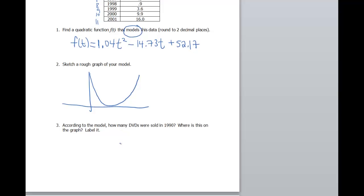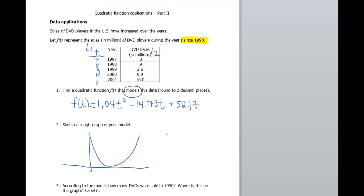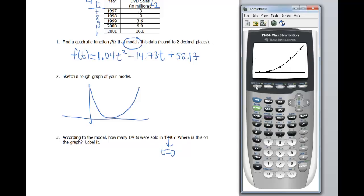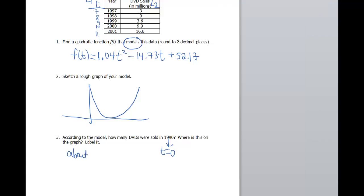Okay, all right, according to the model, how many DVDs were sold in 1990? Okay, so 1990 is our year. T, remember, is years since 1990. So that means we want to look at where T equals zero. Okay, so let's take a look at our table. So if I go to second table, since I can't see much in my graph here, since I did my zoom stat, if I go back to zero, it gives me 52.166. Well, so yeah, so we can call that 52, we can say about 52, and then our Y was in millions. So we could say about 52 million. Okay, where is this on the graph? Well, I didn't label it very well, did I? So let's say this would be it right here. So this would be the point zero comma 52.